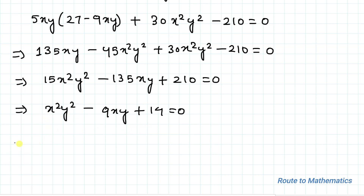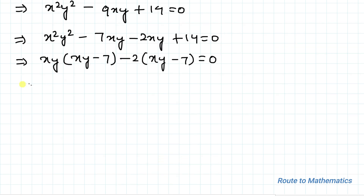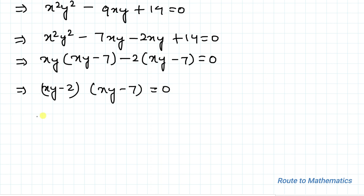Treating xy as a single variable, we have a quadratic equation. Using middle-term splitting: x²y² − 7xy − 2xy + 14 = 0, so xy(xy − 7) − 2(xy − 7) = 0, giving (xy − 2)(xy − 7) = 0. Therefore xy = 2 or xy = 7.